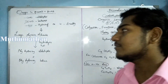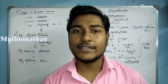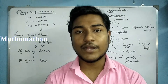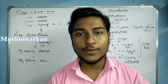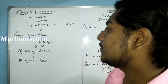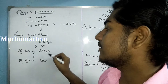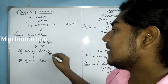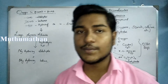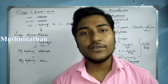Carbohydrates can be large polymeric molecules. If we have a large molecule and perform hydrolysis, we get simpler units. On hydrolysis, if we get a polyhydric aldehyde or a ketone, we classify it as a carbohydrate.